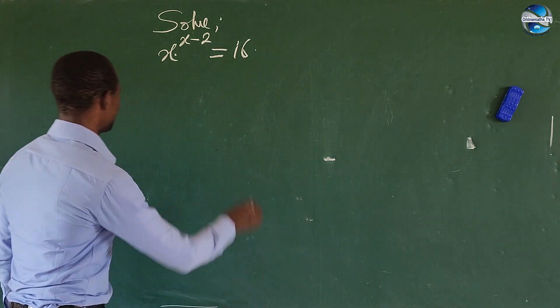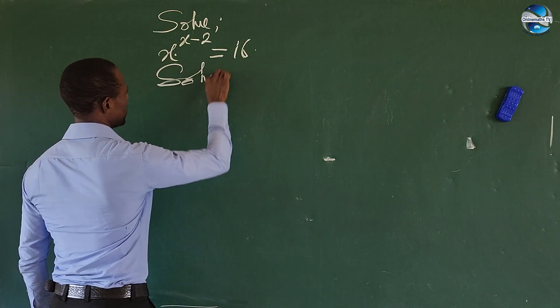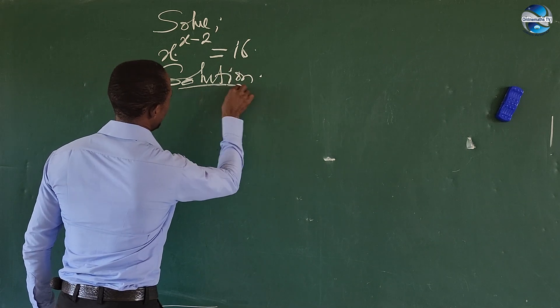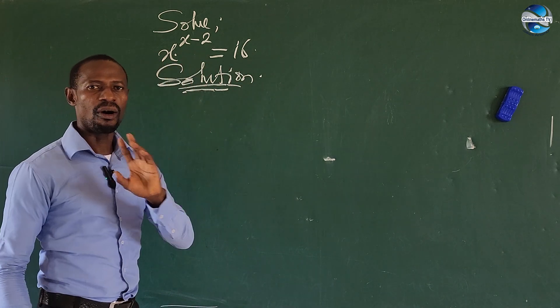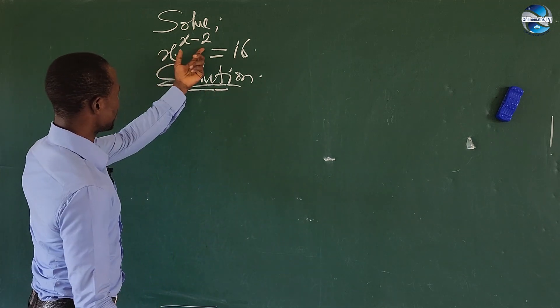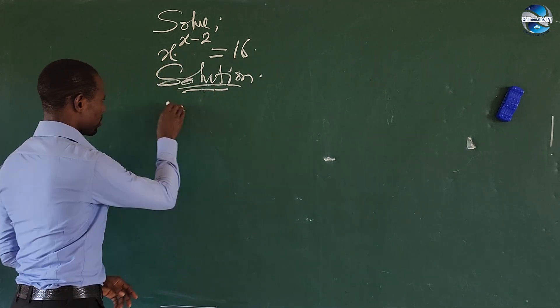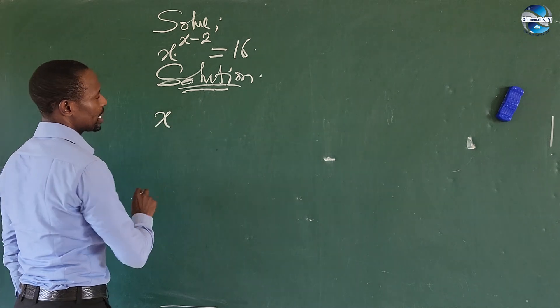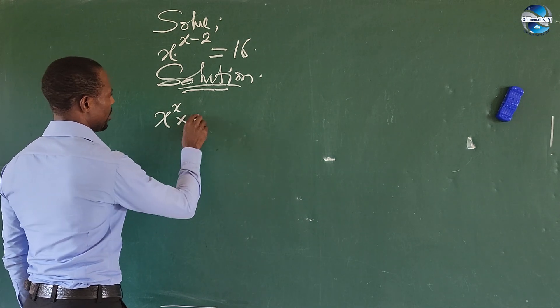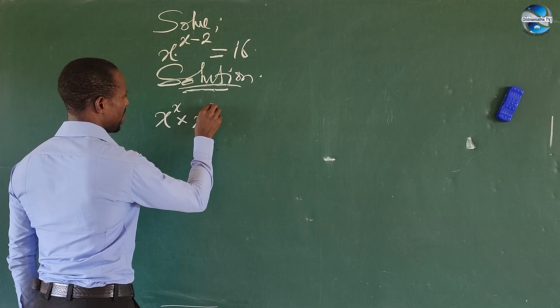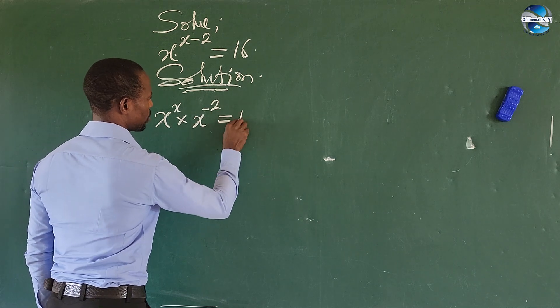Let's go into this solving. Now the first thing is, according to the law of indices, we can rewrite the whole of this expression here. So we can write this as x to the power of x times x to the power of minus 2. This is equal to 16.